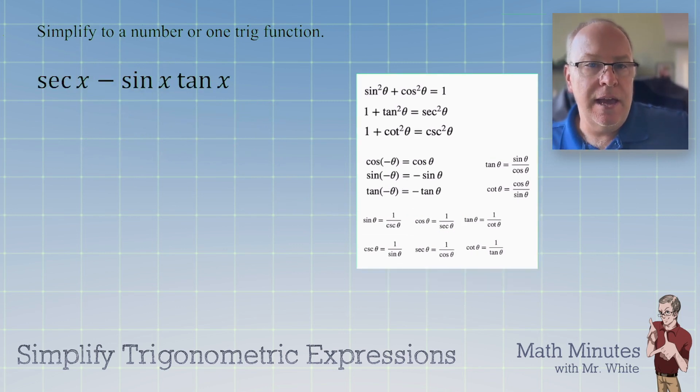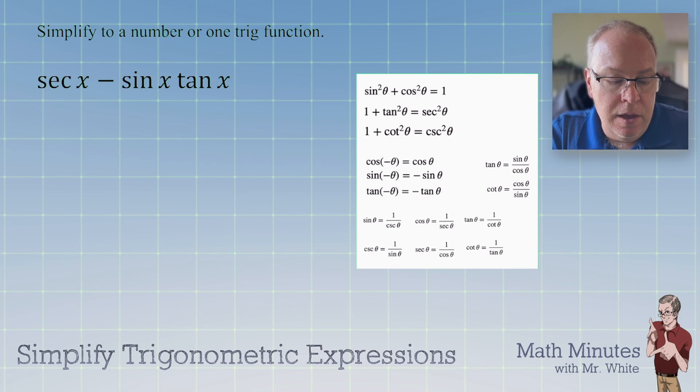Alright. sec x - sin x tan x. What do you have? What kind of ideas do you have here? This is kind of a neat question, I think. Sometimes you have to form somewhat of a game plan before you attack it. But you know what? Let's follow my advice from the very first example. And let's convert everything to sines and cosines and see where it goes from there. So sec = 1/cos.